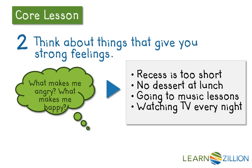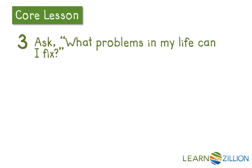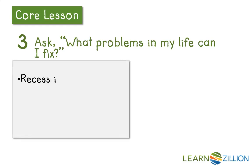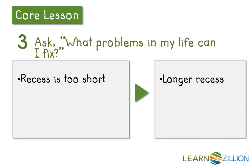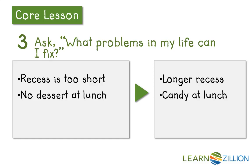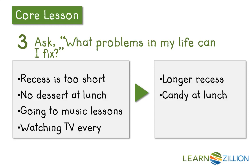I know I want to write an opinion letter, but writing to someone only about what makes me happy or angry just won't be enough. I need to write to convince them to change something. So I'm going to ask: what problems in my life can I fix? Recess being too short — I want recess to be longer, and I could write a letter to convince someone to make that happen. The same goes for no dessert at lunch — I could write a letter to have candy at lunch. Music lessons make me happy, but I can't change anything there, so that won't make a good topic. Finally, I love watching TV, so I could write a letter to my parents arguing that I should be able to watch more TV at night.